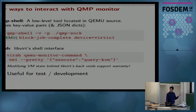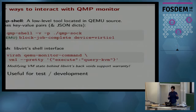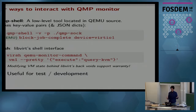LibVirt also offers a QEMU monitor command through its shell interface, through which you can type JSON. However, there's a caveat: you don't want to modify the virtual machine state behind LibVirt's back, because then you get to pick up the pieces if it breaks. So it's useful only to query, not to modify the virtual machine state.